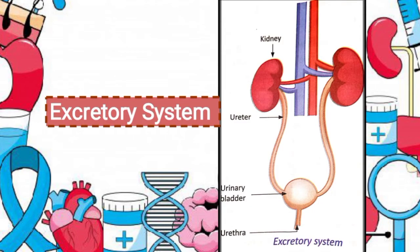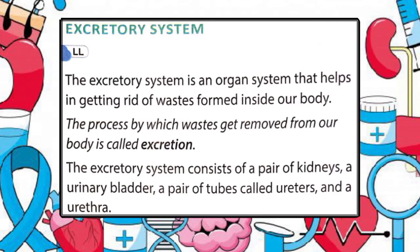Now let's understand what the excretory system is. The excretory system is a collection of organs with the main function of excretion — the process of disposing waste from the body. Its main functions include eliminating waste products such as urea and other waste. These waste products are excreted from the body through urine. The excretory system consists of a pair of kidneys, a urinary bladder, a pair of tubes called ureters and the urethra. Let's understand them in detail.